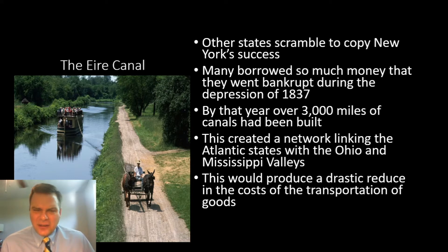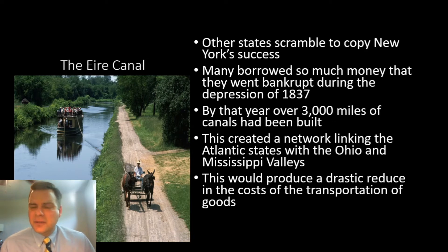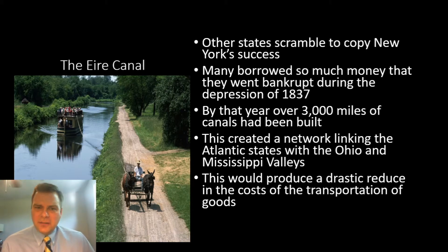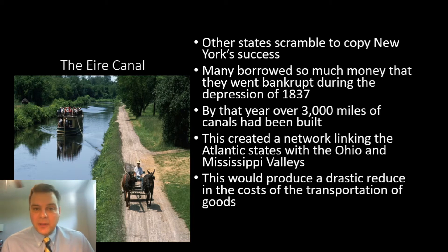When the federal government did slowly get into funding these improvements, between 1787 and 1860 about $60 billion was spent federally to facilitate internal improvements. However, states themselves spent ten times as much money. These internal improvements were facilitating and supporting the American economy — without them, the market revolution wouldn't have taken place.